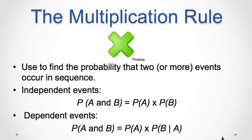Hello everyone. This is our fourth and last lecture for Chapter 4: An Introduction to Probability. In this lecture video we will discuss how to calculate probabilities for independent events, mutually exclusive events, and not mutually exclusive events. We will begin with the multiplication rule for independent events. Remember that independent events are when one event has no effect on subsequent events.